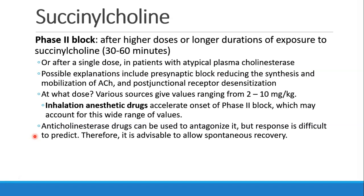Phase 2 block occurs when patients receive high doses or long durations of succinylcholine — for example, running an infusion for 30 to 60 minutes or more. Patients with pseudocholinesterase deficiency could get phase 2 block after a single dose, which likely explains the 4 to 8-hour prolonged response. Explanations include presynaptic block reducing acetylcholine synthesis and mobilization, or desensitization at the postjunctional receptor. The dose needed varies widely — some say 2 mg/kg, some say 10 mg/kg — and inhalational drugs like halothane or sevoflurane accelerate onset of phase 2 block. In theory, anticholinesterase drugs can antagonize phase 2 block, but most recommend allowing spontaneous recovery instead.